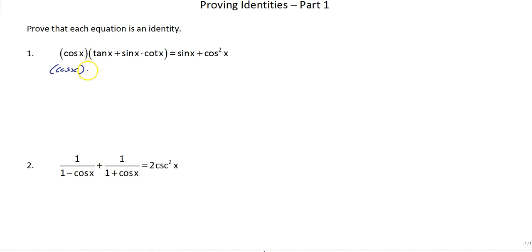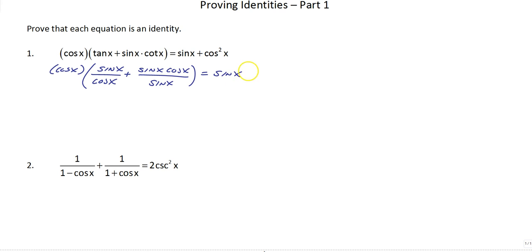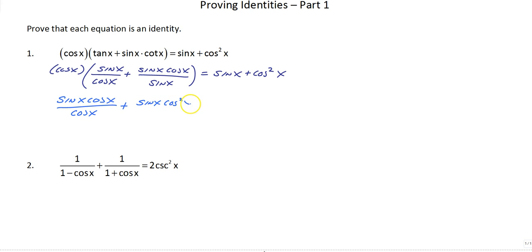So, we have cosine x. Tangent is sine x over cosine x, plus cotangent is cosine x over sine x. This is going to give us sine x cosine x over sine x. And of course, that is equal to sine x plus cosine squared x. Now I'm going to distribute cosine x in, so we have sine x cosine x over cosine x plus sine x cosine squared x over sine x, and that of course is equal to sine x plus cosine squared x.